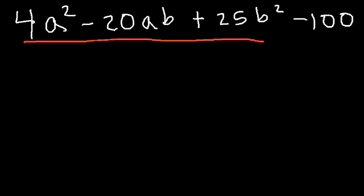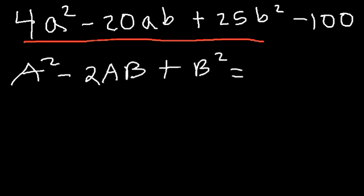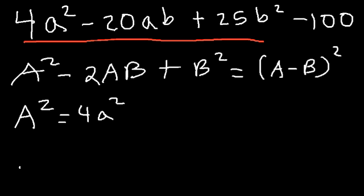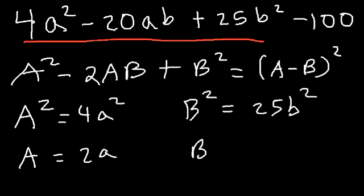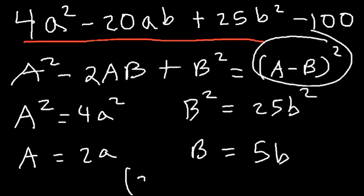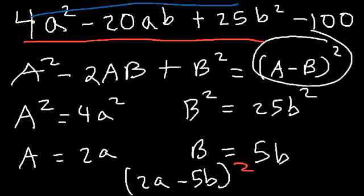This comes from the formula a squared minus 2ab plus b squared equals (a − b)². Here, a squared equals 4a squared, so a is 2a. And b squared equals 25b squared, so b is 5b. Plugging into the formula, the first three terms factor as (2a − 5b) squared.